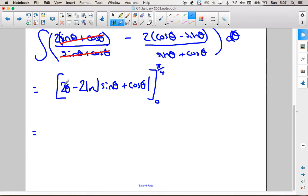So now when we put our limits in, we're going to have 2 lots of pi over 4, which is pi over 2. Minus 2 ln of sin of pi over 4. Make sure you're in radians for this.